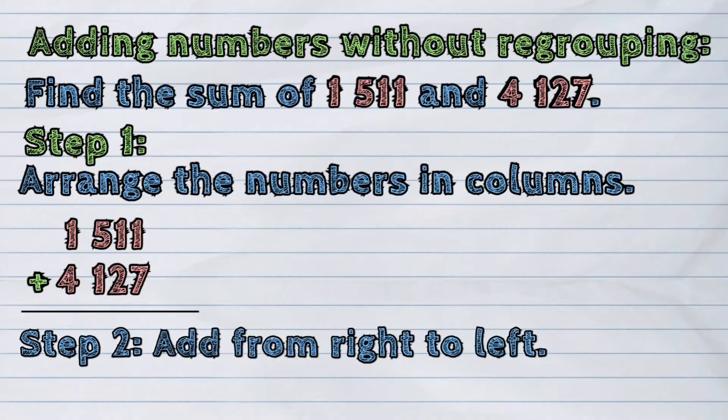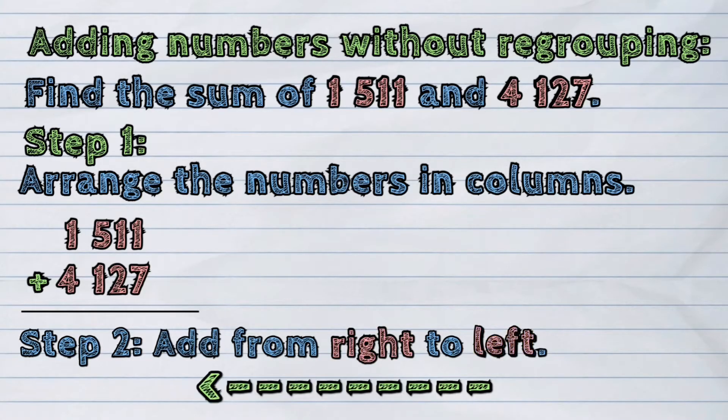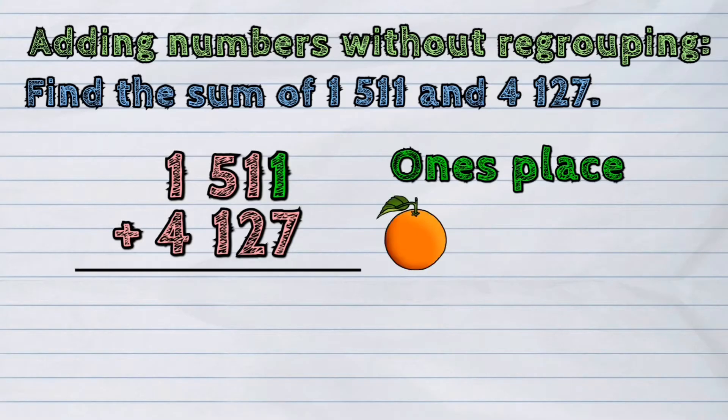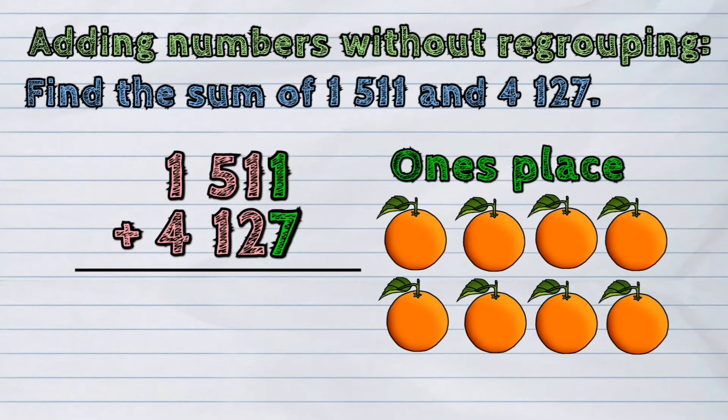Step 2. Start adding from right to left. We will now begin adding the digits in 1's place. The digits in 1's place are 1 and 7. The sum will be 8.